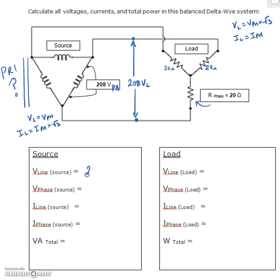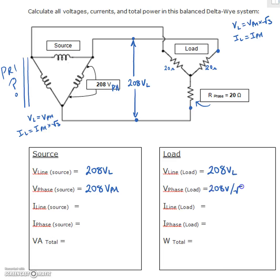For the source, the line voltage is 208 volts and the phase voltage is 208 volts. That line voltage travels over and gets impressed across the resistive Y load. But since the load is a Y, the voltage is split across two resistors, so the phase voltage is 208 divided by root 3, which gives us 120 volts across each resistor.